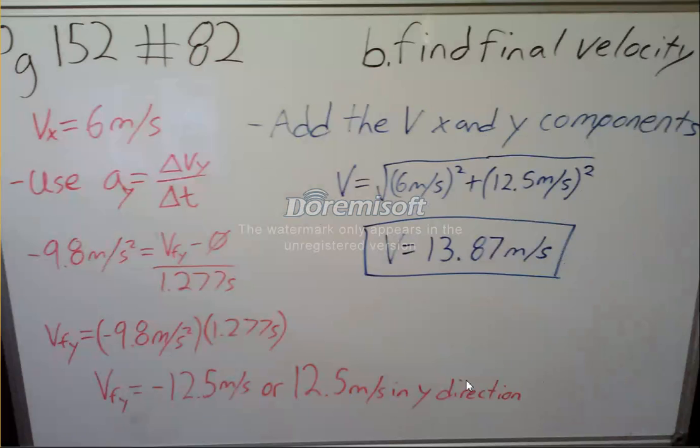For part B, it asks us to find the final velocity relative to the rocks when the clam smashes into them. So we've got our v_x equals 6 meters per second.